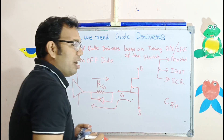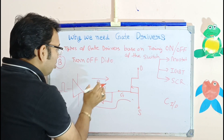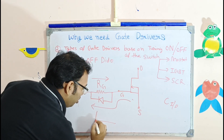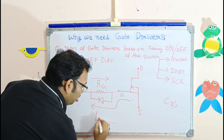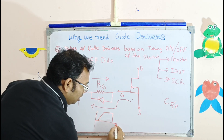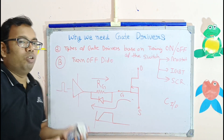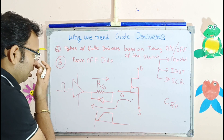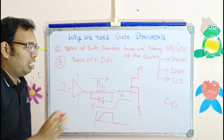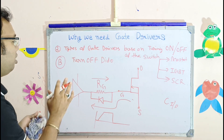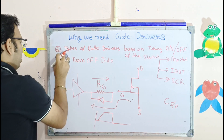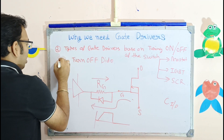Because RG is large, the charging time is longer, so the rise time is slower, but the fall time is very fast because of the low diode resistance. One path is for charging and another is the discharging path for the switch. This is Method B.